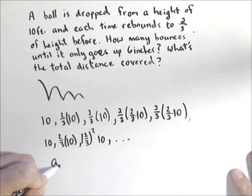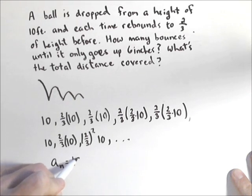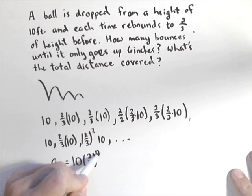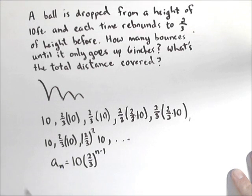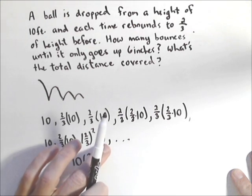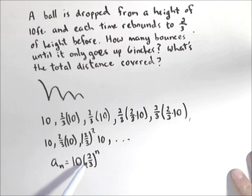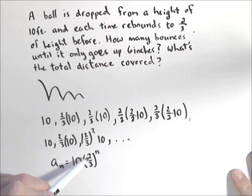So a_n is going to equal how high we go on our first bounce, so 10 times two-thirds to the n minus one. Well, let's do it to the n because when we have no bounces it's 10. Again, at one bounce it's 10 times two-thirds, so this will give us basically the height of any given bounce.